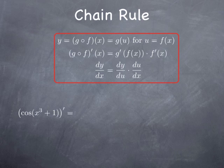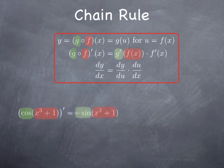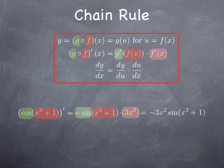Let's look at a second example: I want to differentiate cosine of x cubed plus 1. I have an inside function x cubed plus 1, corresponding to f in my formula, plugged inside the outside function cosine, corresponding to g. According to the chain rule, I obtain the derivative of the outside function evaluated at the inside function. The derivative of cosine is negative sine, evaluated at x cubed plus 1, giving negative sine of x cubed plus 1. Then I multiply by the derivative of the function inside, which is 3x squared. So the derivative of this function is negative 3x squared multiplied by sine of x cubed plus 1.